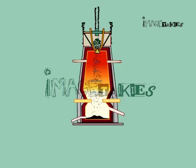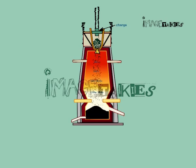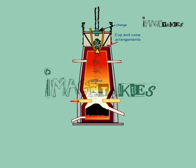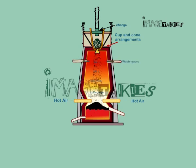The mixture is introduced into the blast furnace (figure 15.3) from the top of the furnace by the cup and cone arrangement. Hot air is blasted from the bottom of the furnace. The following reactions take place and finally, iron is produced.